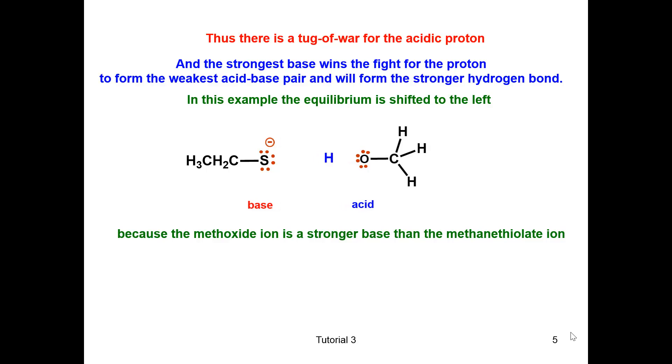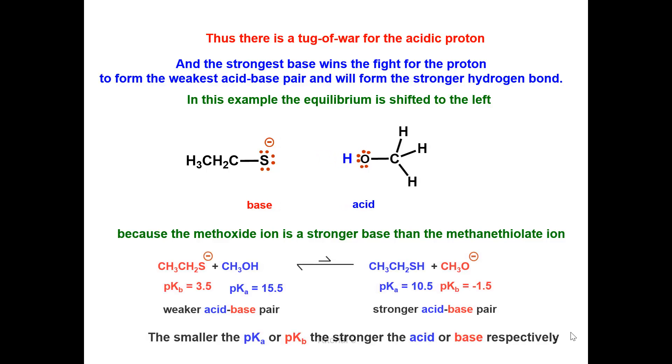In this example, the equilibrium is shifted to the left because the methoxide ion is a stronger base than the ethane thylate ion. Notice the pKB of the ethane thylate is 3.5 and the pKB of the methoxide ion is -1.5. So the methoxide ion is a much stronger base.